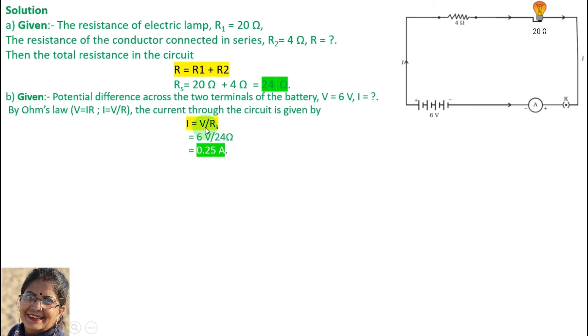I equals V divided by R. The V value is 6 volts, and the total series resistance is 24 ohms. So we write 6 volts divided by 24 ohms.